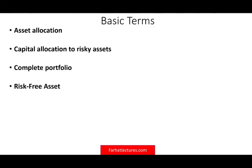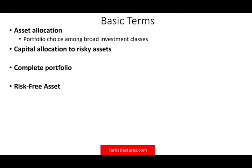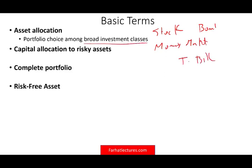To start this session, we want to be familiar with some basic concepts — some are new, some you have already seen. The first one is asset allocation: it's a portfolio choice among broad investment classes. For example, you want to invest in stocks, bonds, money market, or treasury bills. Those are broad investment classes. Or we have something called capital allocation to risky assets — the choice between risky and risk-free assets.